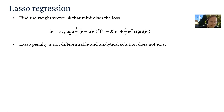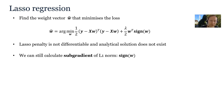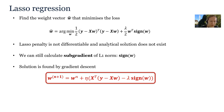Unfortunately the LASSO penalty is not differentiable, and therefore an analytical solution does not exist. However, we can still calculate the sub-gradient of the L1 norm. The sub-gradient is a generalization of the first derivative, and for the L1 norm it is equal to sign(w). The solution is then found by gradient descent just as before.